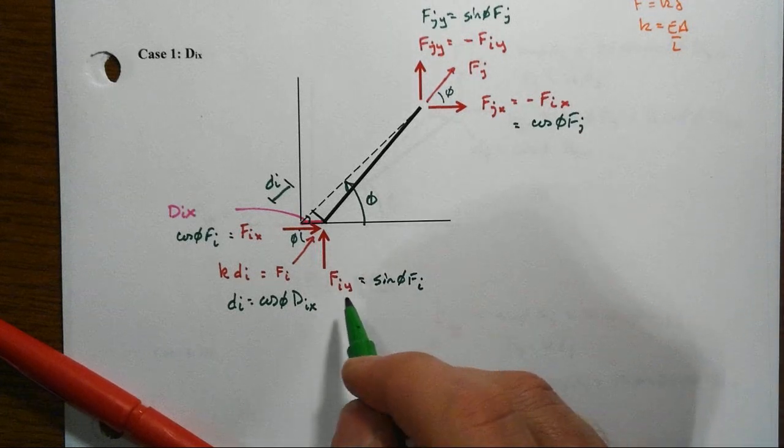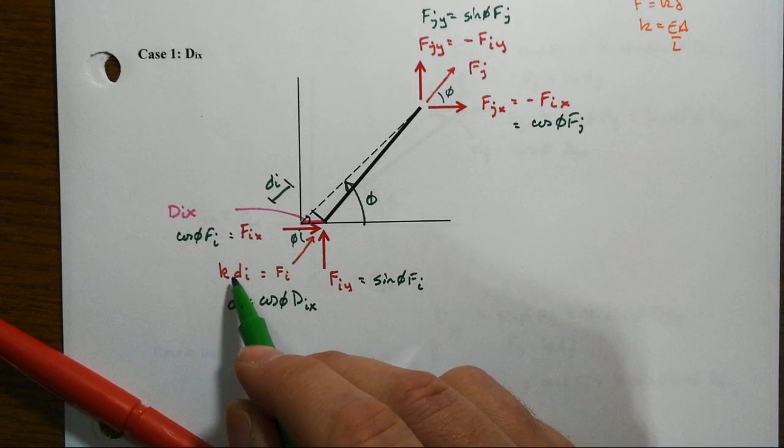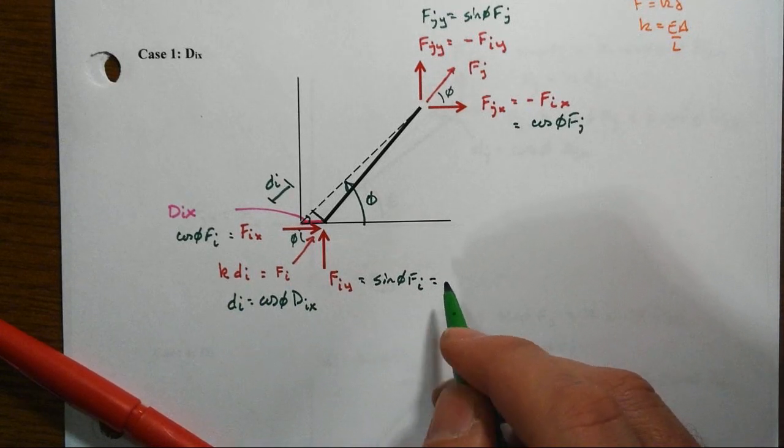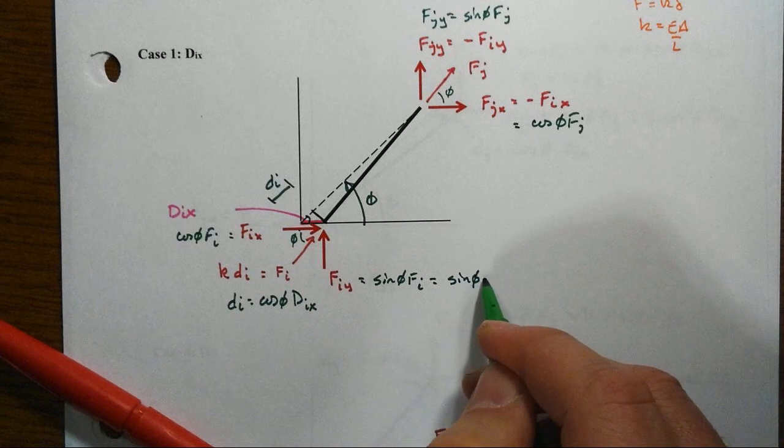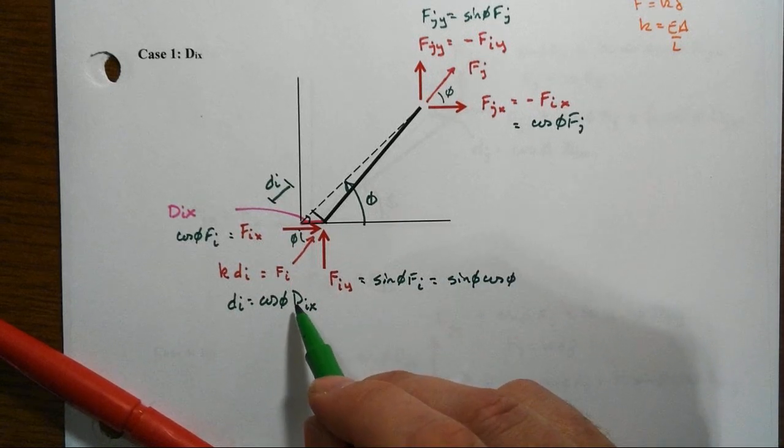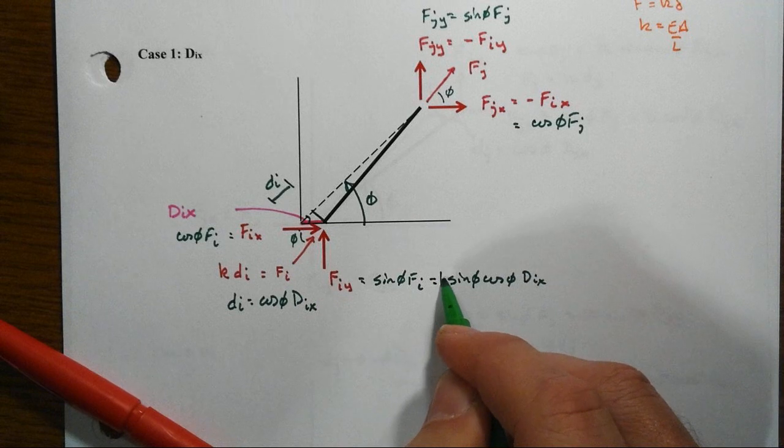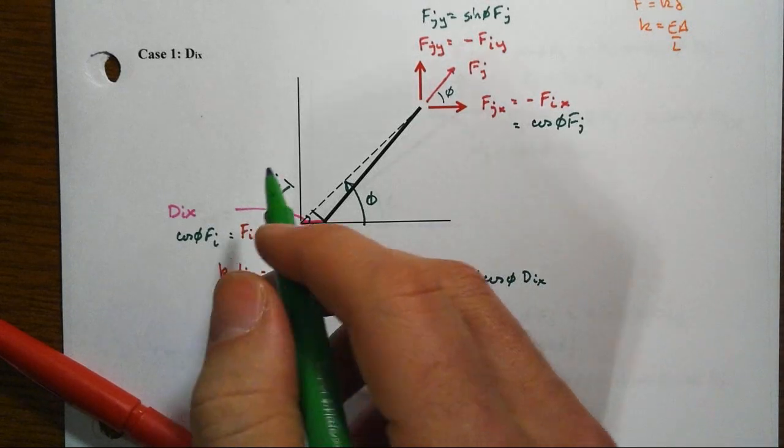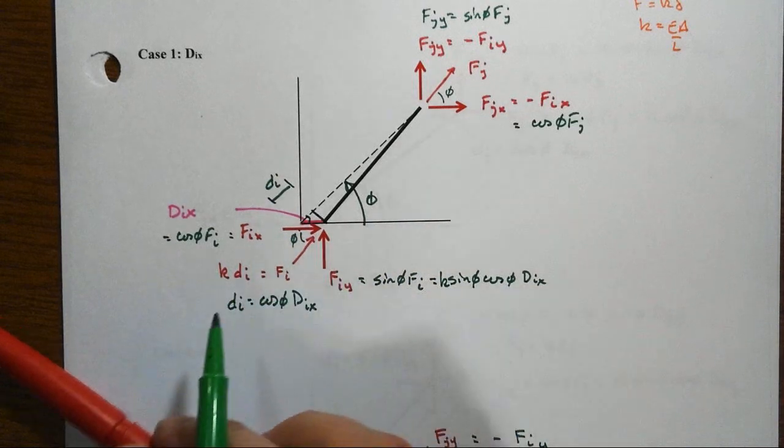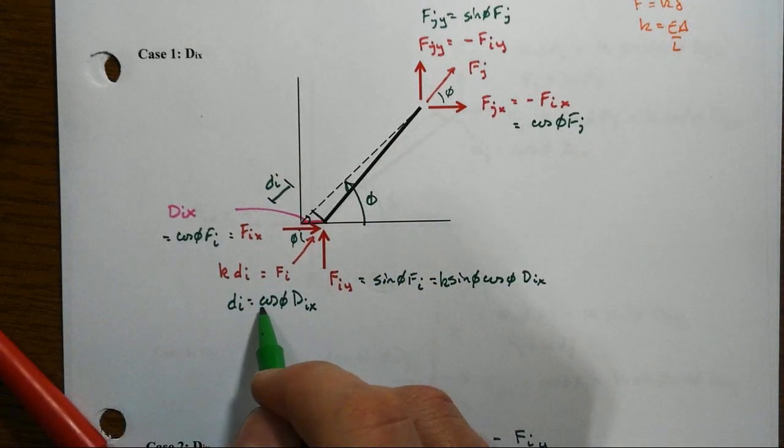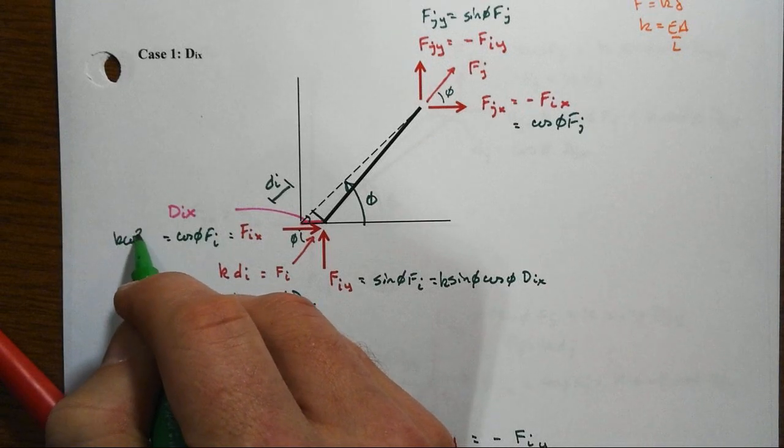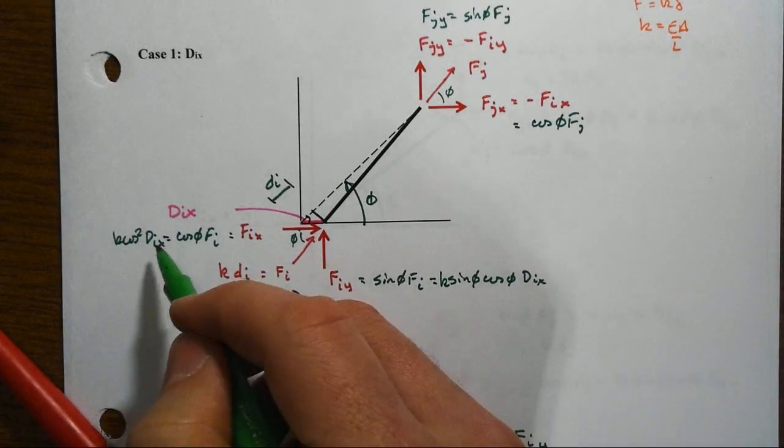Okay, so with that then, we find out we can substitute in. If we now know that DI is equal to that, then we can put into here, and so for instance, this becomes sine of phi times cosine of phi times DIX, and of course, we've got to get the stiffness coefficient in there also. Likewise, over here, then FIX, we're going to have a cosine times K times this cosine, so we'll have K cosine squared times DIX.